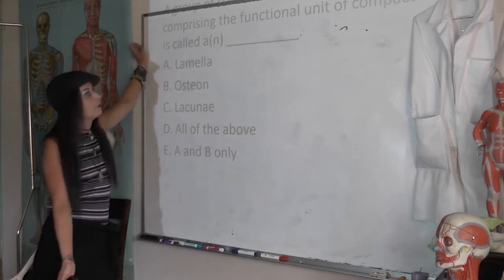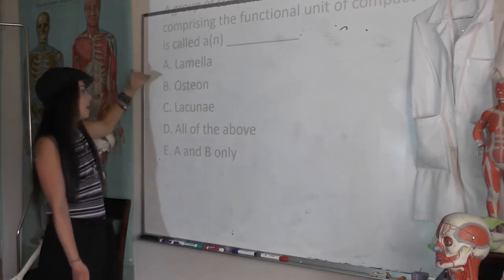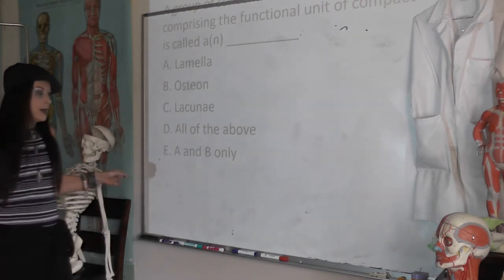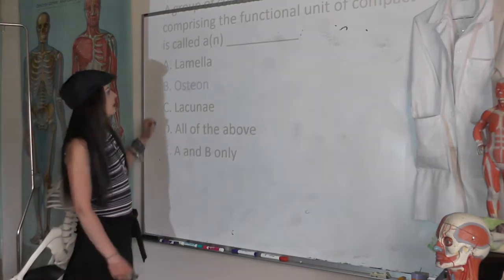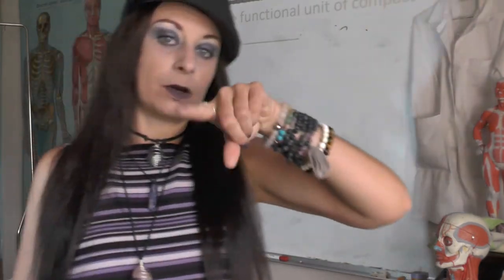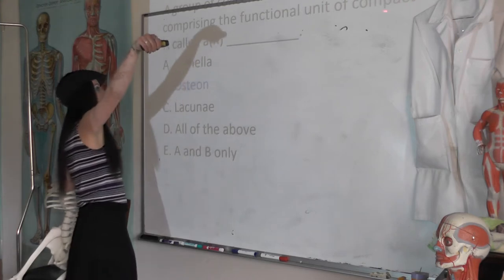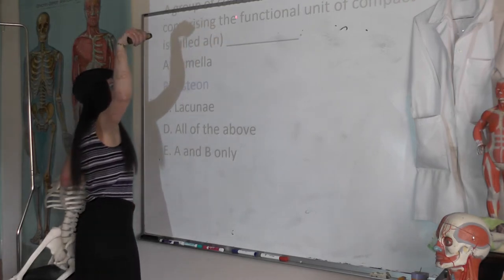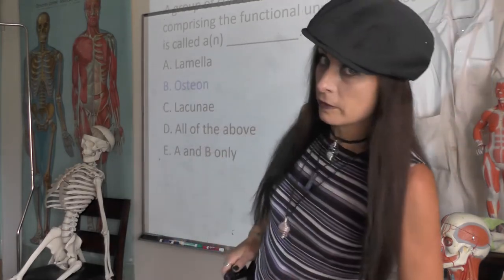A group of concentric rings of bone comprising the functional unit of compact bone is called: A, a lamella; B, an osteon; C, lacunae; D, all of the above; E, B only. The answer is an osteon. A lamella is one concentric ring of bone, and if you get a bunch of those around a central canal, that's an osteon. The big keywords are 'the functional unit of compact bone,' so that should have tipped you off.